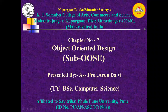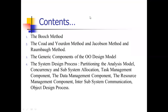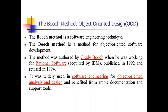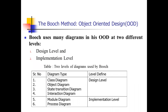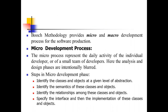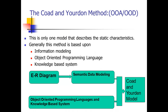Good morning everyone. Today we are going to continue with chapter number seven, Object Oriented Design. In the last session, we covered the Booch method — its notations, class diagram examples, and the micro and macro development processes from Booch methodology. Today we are going to continue with the Coad-Yourdon method.